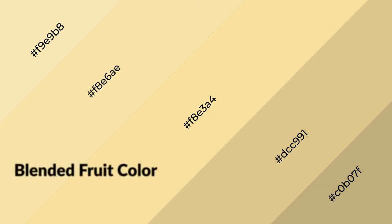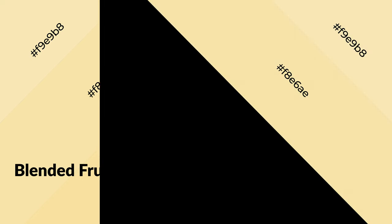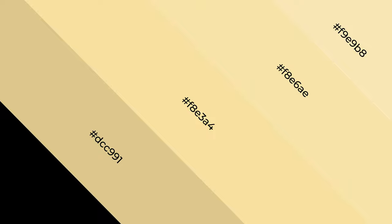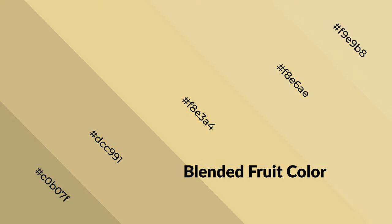Blended fruit is a warm color and it emits cozier and active emotions. Warm colors are symbols of warmth, fire, heat, and sunshine. It also evokes joy, passion, love, and even anger. You can see warm colors used in restaurants and gyms.